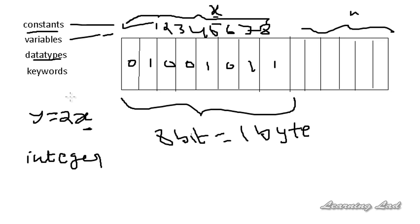These type modifiers influence the number of bytes used to store a particular value. For example, some compilers take two bytes to store an integer value and some take four bytes. When we use these type modifiers they increase or decrease the bytes or memory taken to store that particular variable of that type.